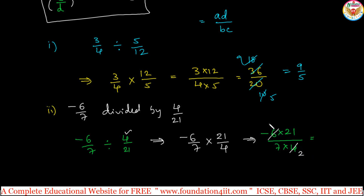6 and 4, 2s are 2, 3s are, and 7, 1s are 7, 3s are. Directly also you can multiply. Minus is there, 3 into 3 is 9 divided by 2. Minus 9 by 2 is answer, right?